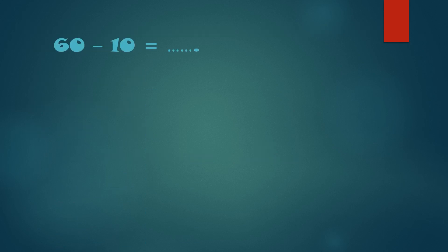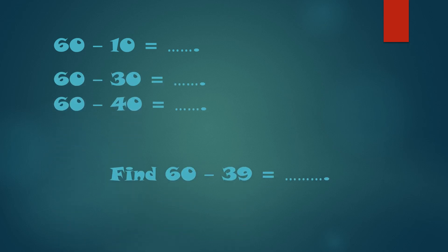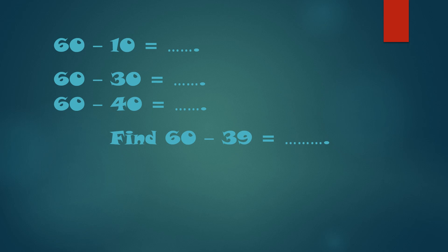Let's see this example: 60 minus 10, 60 minus 30, 60 minus 40, and now find 60 minus 39. 60 minus 10: 0 minus 0 equals 0, 6 minus 1 equals 5, so it's 50.